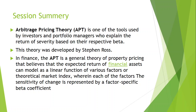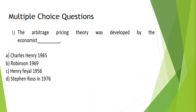Arbitrage Pricing Theory is one of the tools used by investors and portfolio managers to explain the return of a security based on its respective beta. This theory was developed by Stephen Ross. In finance, APT is a general theory of asset pricing that believes the expected return of financial assets can be modeled as a linear function of various factors or theoretical market indices, wherein the sensitivity to each factor is represented by a factor-specific beta coefficient. Let us now understand this concept through multiple-choice questions.